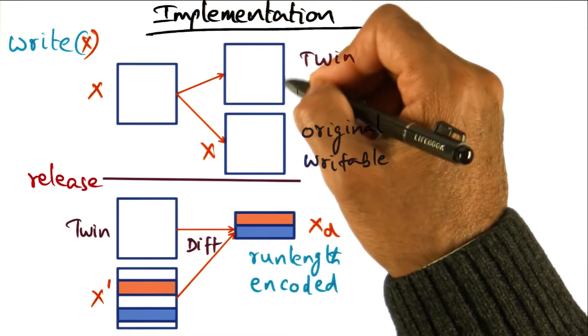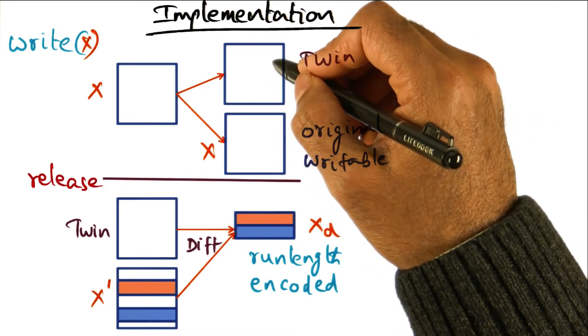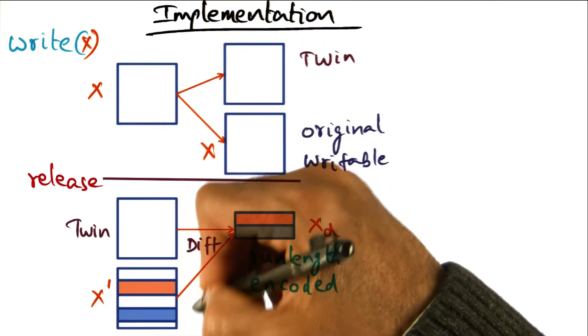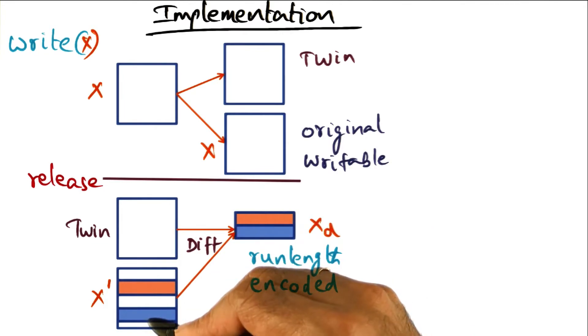The original version, we created a twin, right? So there's a twin and this is the original page, but this original page we made modifications to. X has now become X prime.